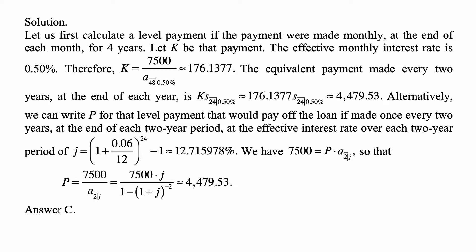Alternatively, we can write P for that level payment that would pay off the loan if made once every two years at the end of each two-year period, at the effective interest rate over each two-year period.